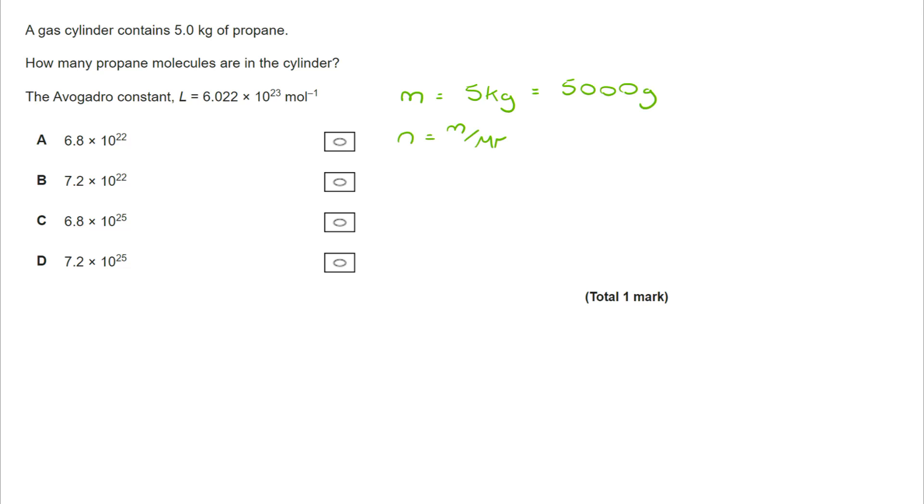My M is 5,000. My MR, three carbons and eight hydrogens, is 44. That allows me to get the value of N, 113.636. But I don't want the number of moles. I want the number of molecules. So I'm going to multiply that by Avogadro's number, and that's going to take me to 6.8 by 10 to the power of 25. Correct answer is C.